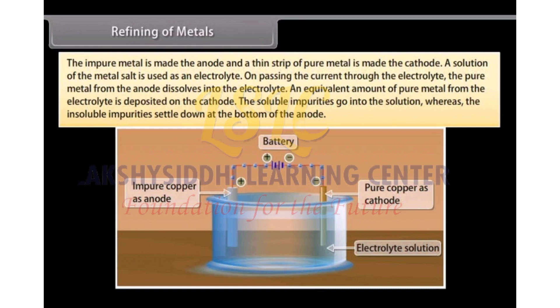On passing the current through the electrolyte, the pure metal from the anode dissolves into the electrolyte. An equivalent amount of pure metal from the electrolyte is deposited on the cathode.